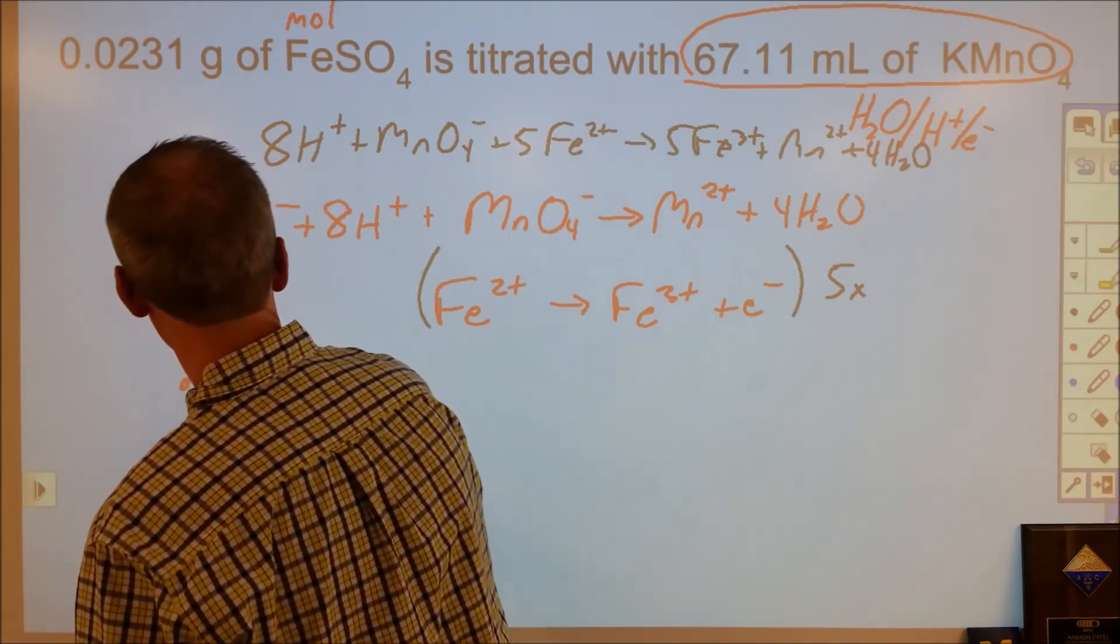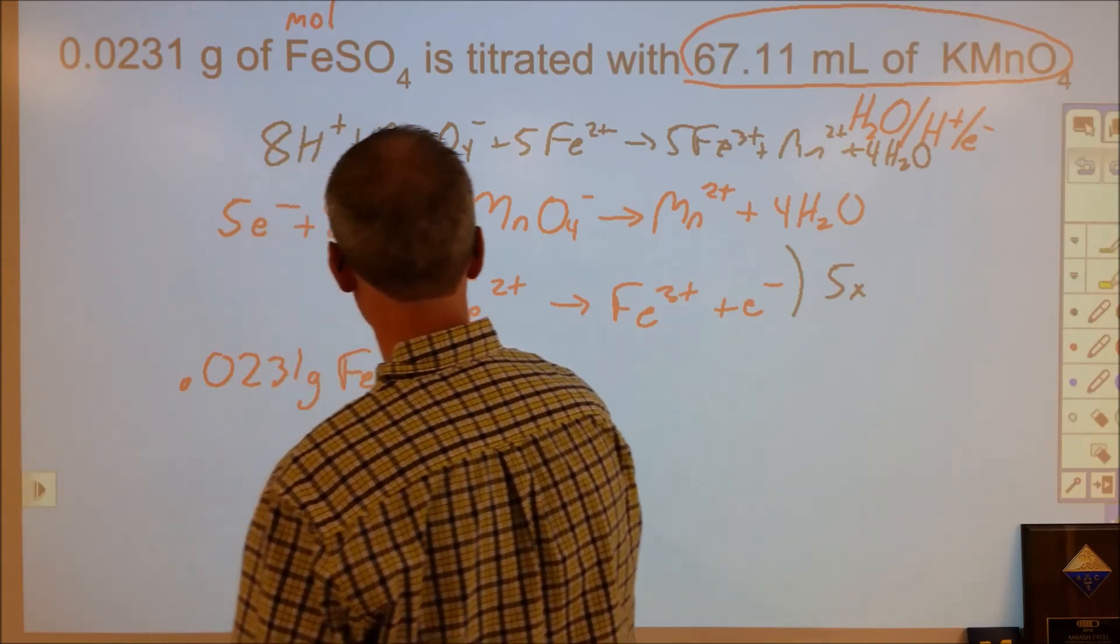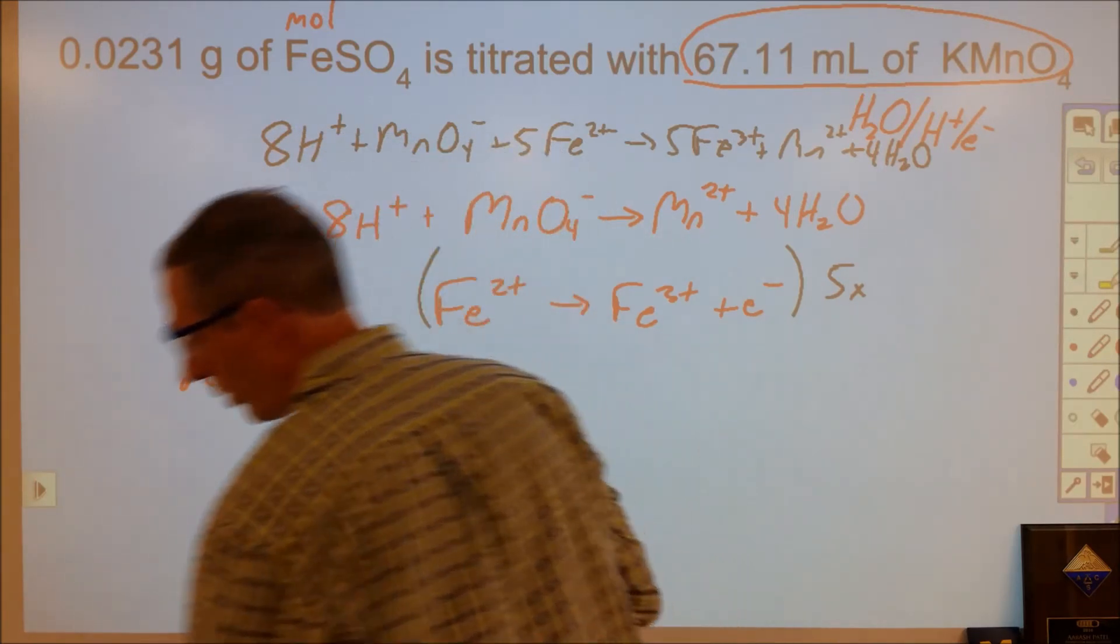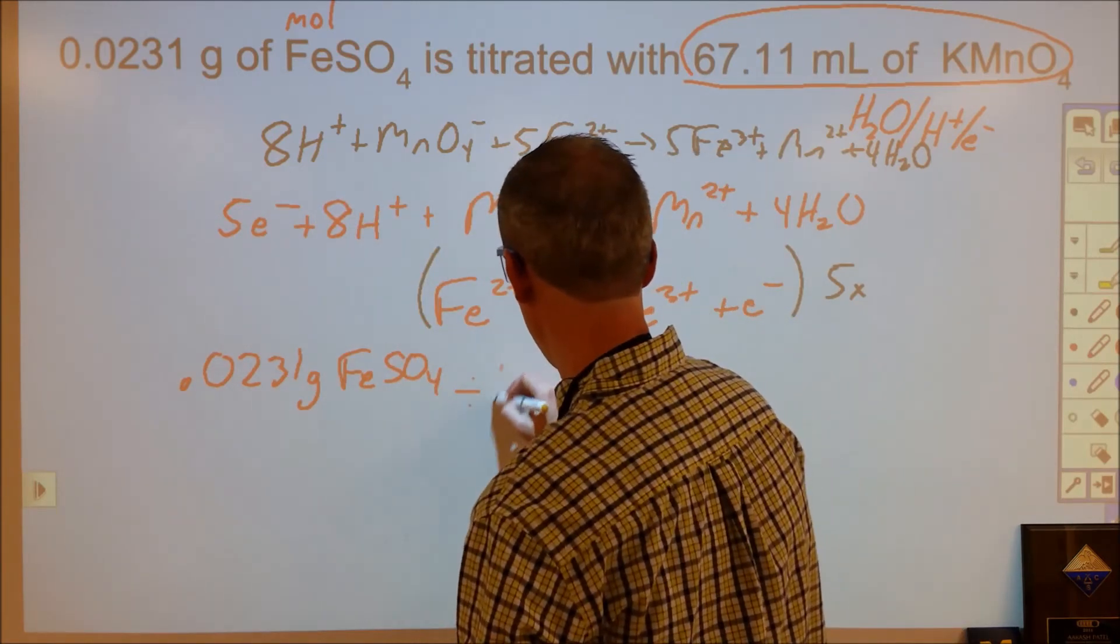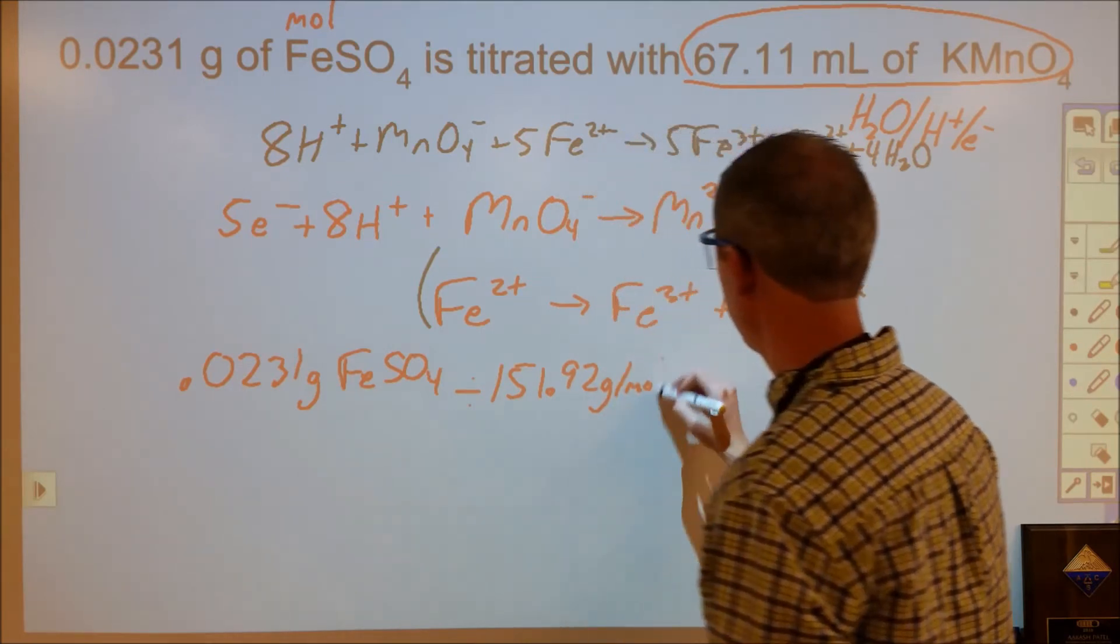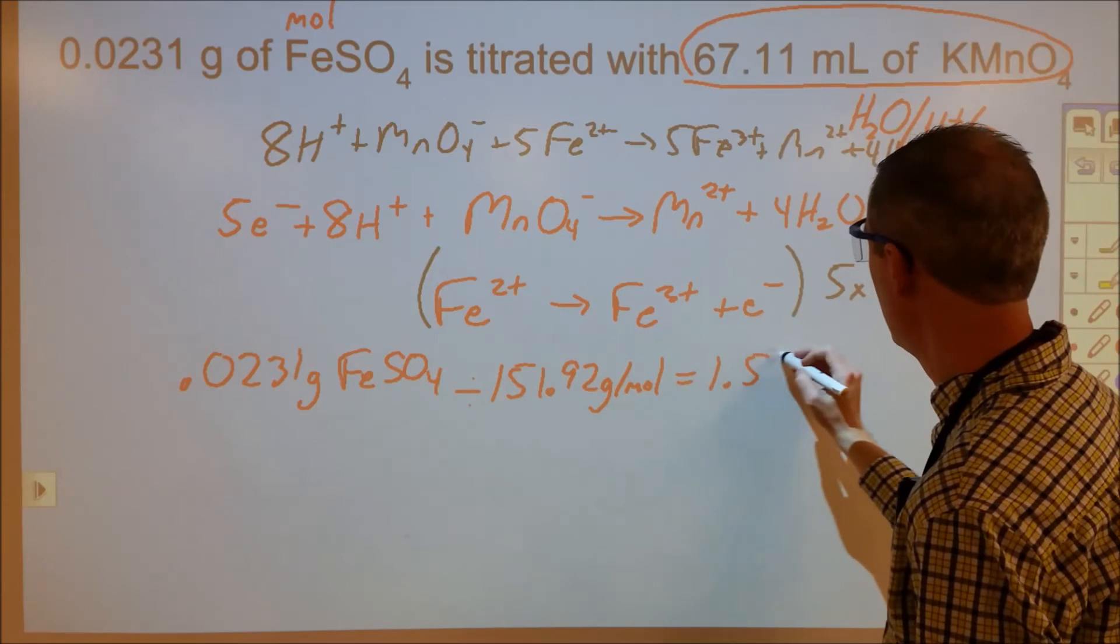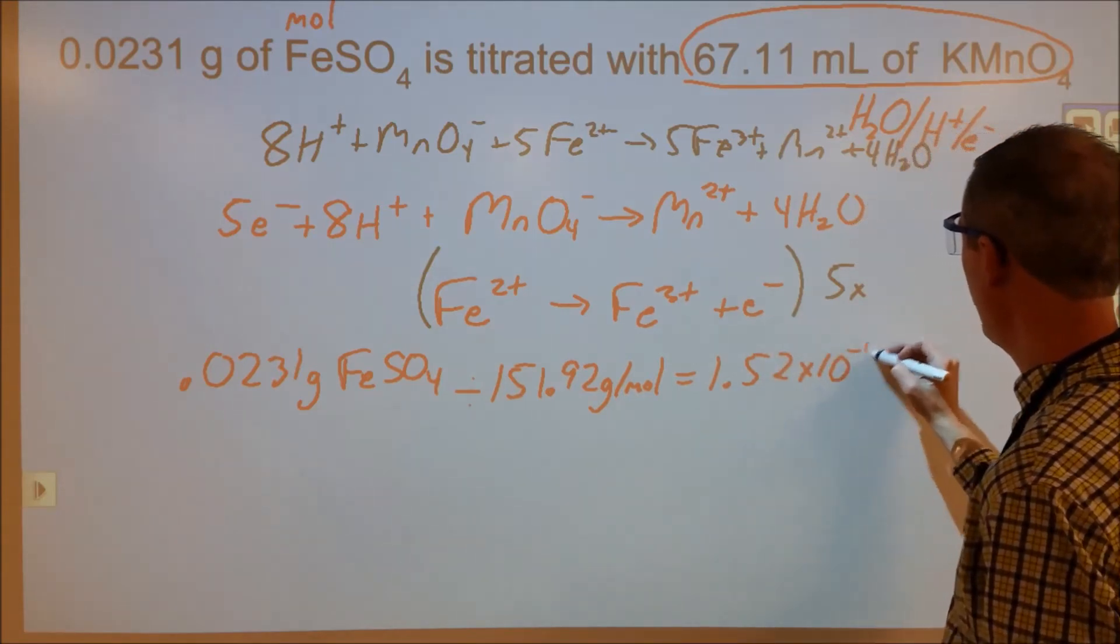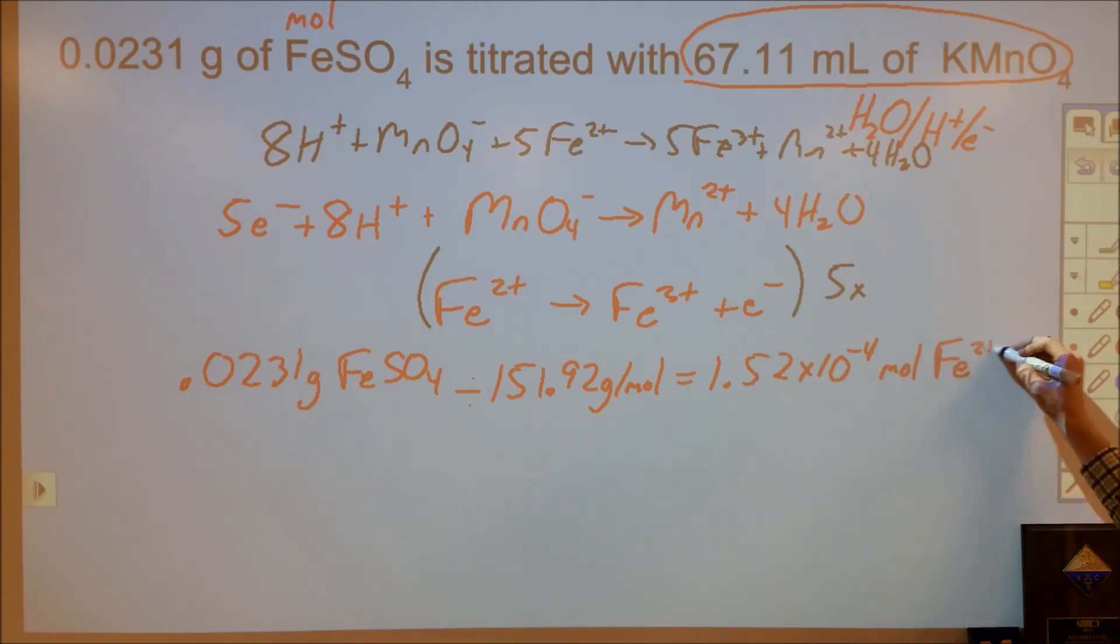So I'm going to take my 0.0231 grams of iron sulfate and I'm going to divide that by my molar mass of iron sulfate, which I found to be 151.92 grams per mole. So that comes out to be 1.52 times 10⁻⁴ moles of iron sulfate, which will also be Fe²⁺ once it's in the solution.